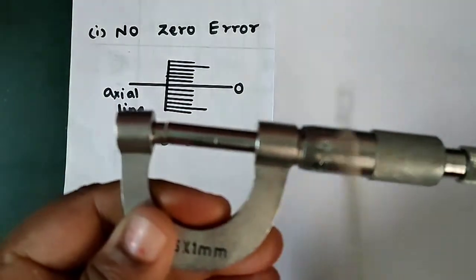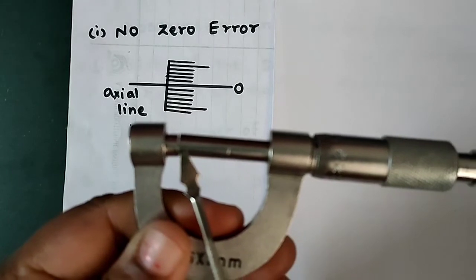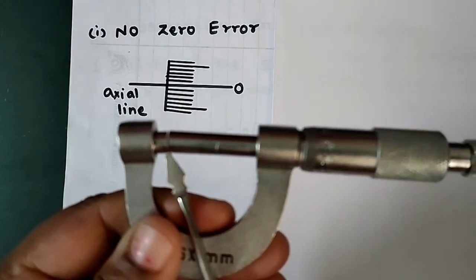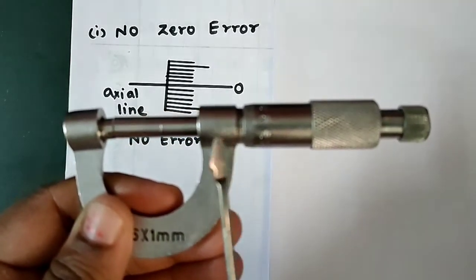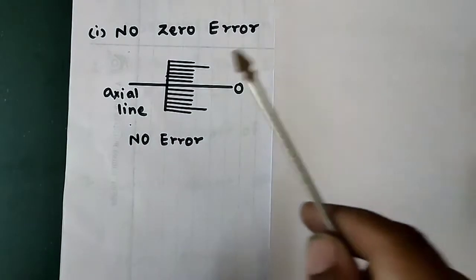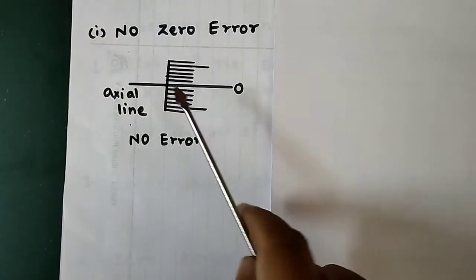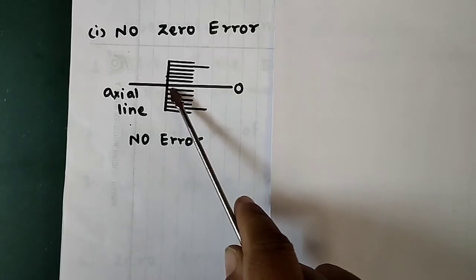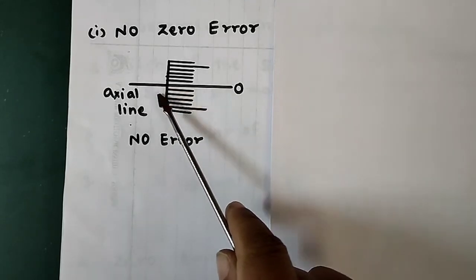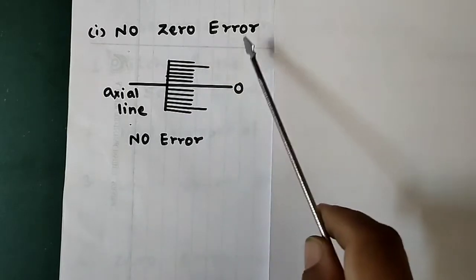Now, bring the two studs closer together and see whether the zero of the circular scale and the axial line match with each other. If they match, there is no zero error.